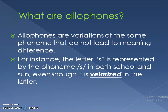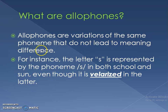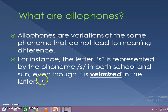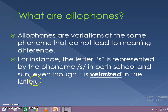How about allophones? Allophones are variations of the same phoneme that do not lead to meaning difference. For instance, the letter S is represented by the phoneme S in both 'school' and 'some'. This is even though it is velarized in 'school'. You can hear that 'some' sounds different than 'school', but we represent them with the same phoneme.